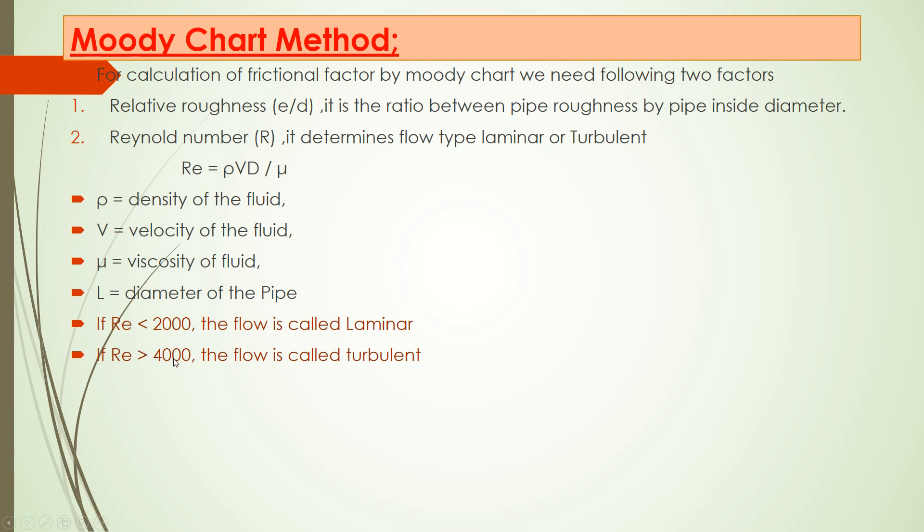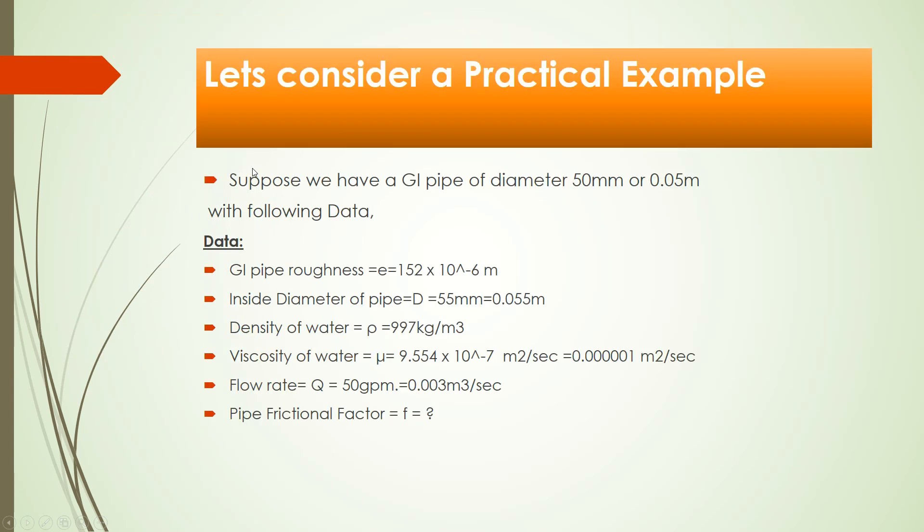And if it is greater than 4000, then your flow is turbulent. Let's consider a practical example. Suppose we have a GI pipe of diameter 50 mm or 0.05 meter, with the following data.